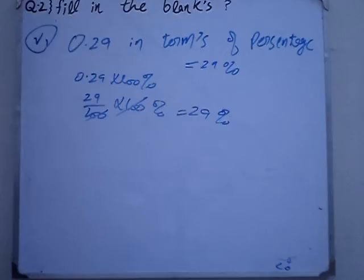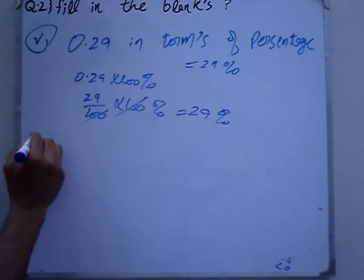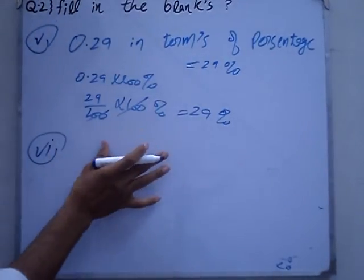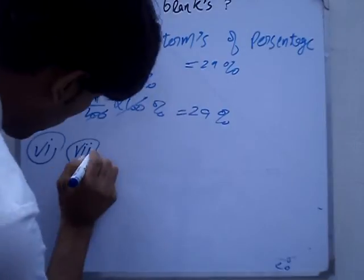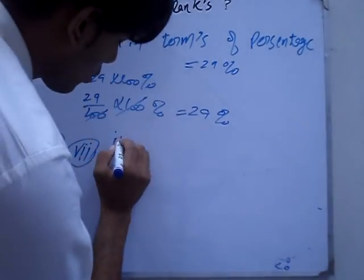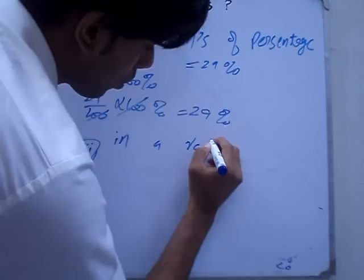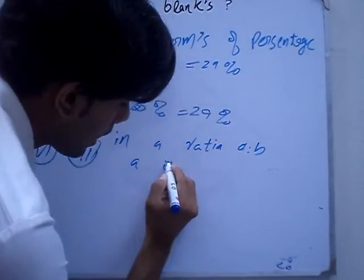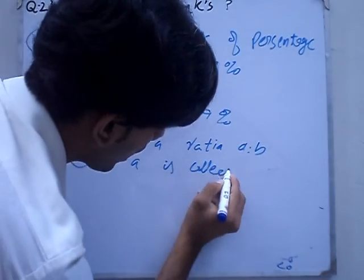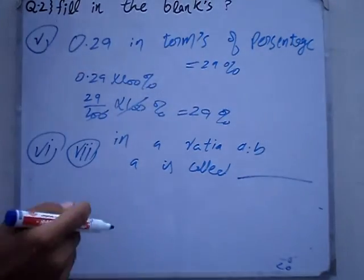Question number 6 or 7: In a ratio a:b, a is called... In a ratio a:b, the first term a is called the antecedent.